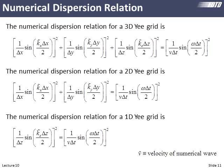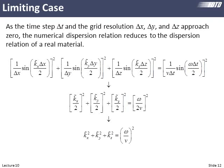Consider the limiting case: let the time step and grid resolution parameters Δx, Δy, Δz all approach zero. The numerical dispersion relation approaches the physical dispersion relation of an actual physical wave. This gives credence to the equation and tells us that as we increase grid resolution — making cell size much smaller, decreasing the time step — we get more accurate answers. But it also means simulations will take an unreasonable amount of time. There's always this trade-off.